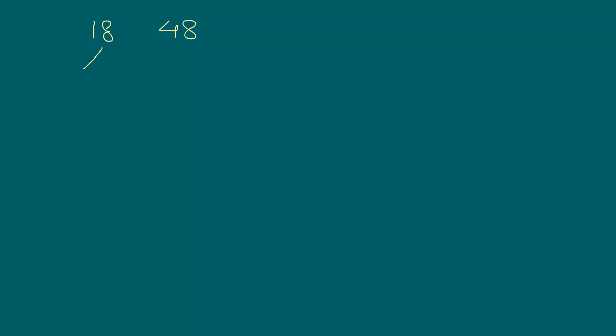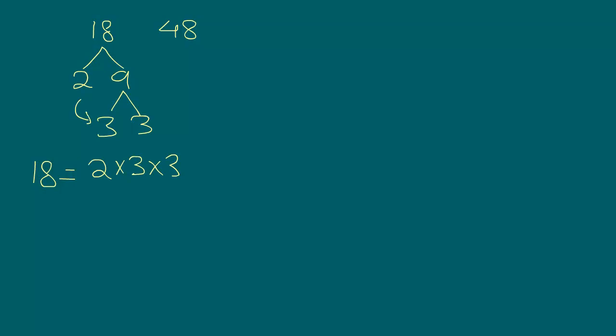So how do we actually find that out? We need to find out all the prime factors for each of the numbers. So 18 we can break it down as 2 times 9, and 9 we can break it down as 3 times 3. So 18 can be written as 2 times 3 times 3. These are all the prime factors of 18.